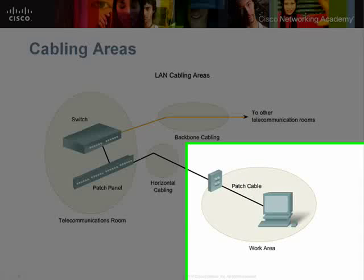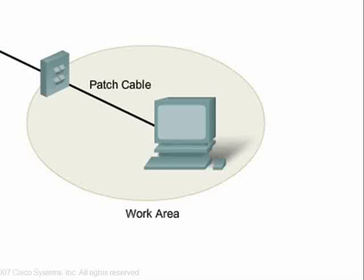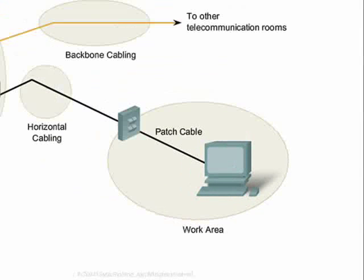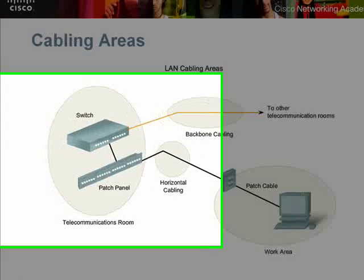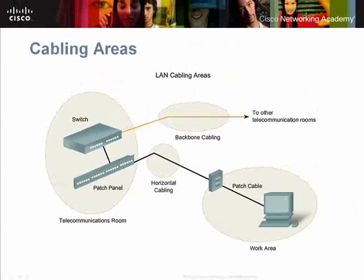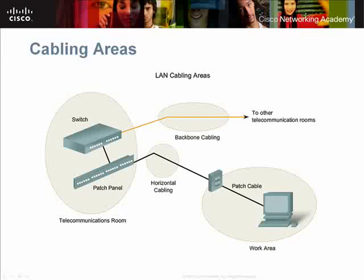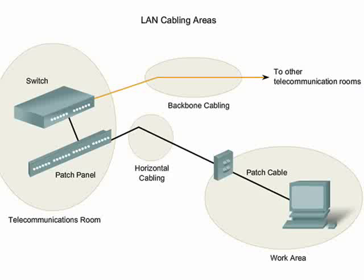When planning the installation of LAN cabling, there are four physical areas you need to consider. Work areas are the locations devoted to end devices such as PCs and IP telephones. Each work area has a minimum of two jacks that can be used to connect an individual device to a network. The telecommunications room is where connections to intermediary devices such as switches and routers are found. These devices provide the transitions between the backbone cabling and the horizontal cabling.